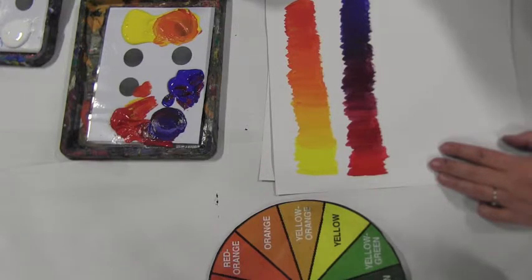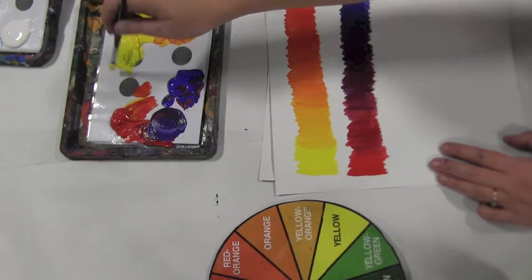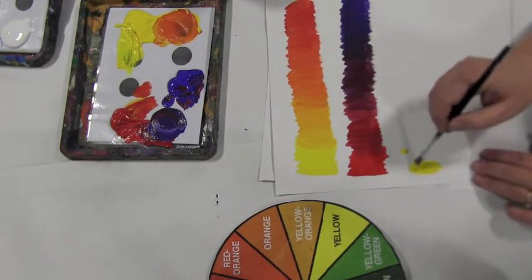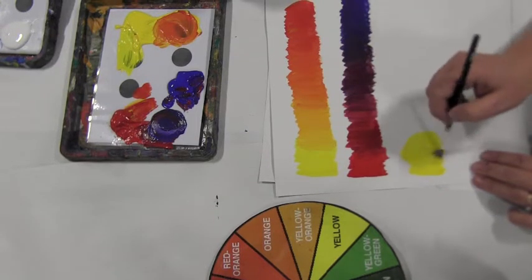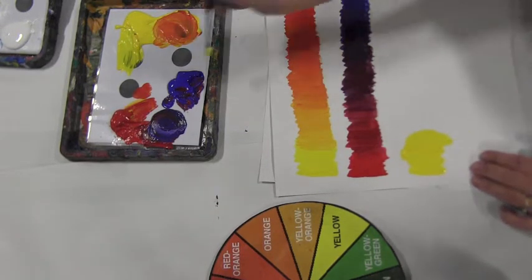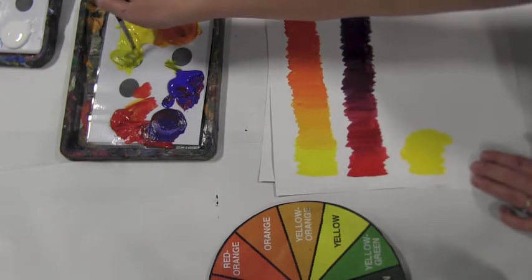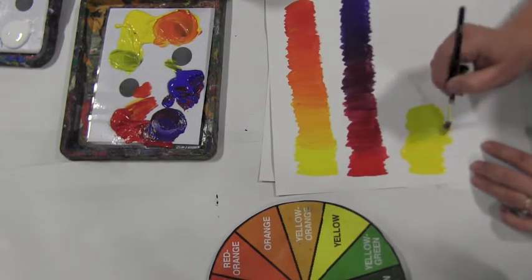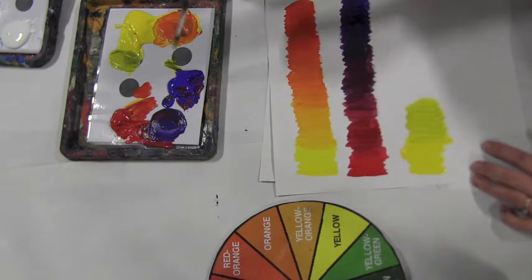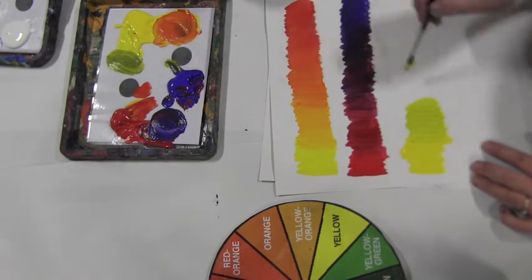So if I wanted to use a green, I would start with the yellow because that's the lightest. Add a tiny amount of blue. Blue is a very strong color, so you only need a small amount. And I can easily get at least five shades of green.